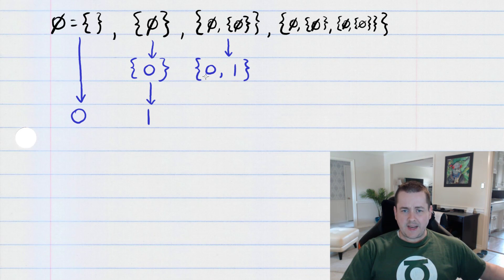So, we have the set containing zero and one. And ask yourself the question, how many elements does this set have? Well, it has two elements. So, let's call this set the number two.